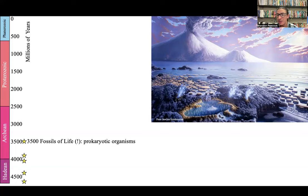Natural selection then has something to act on. Some of them do better than others — they survive, they eat their neighbors, whatever. That's what life is. And once life is present, which we definitely know it is by 3.5 billion years ago, we're off to the races.